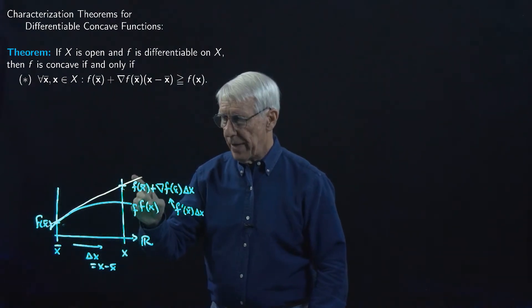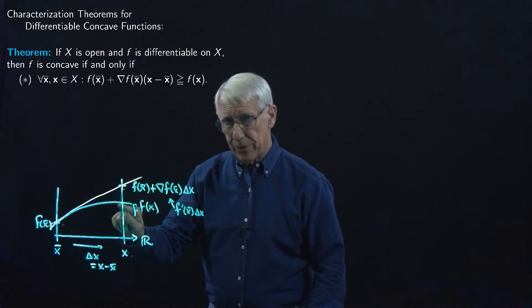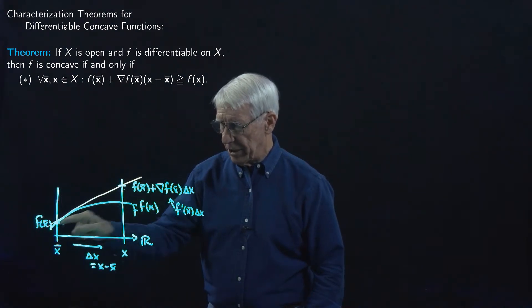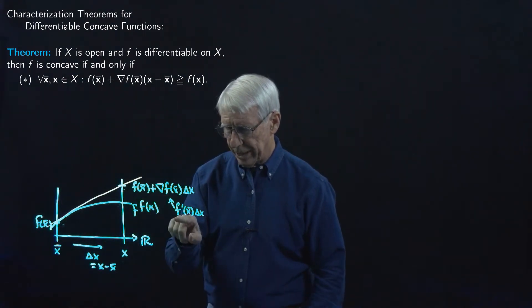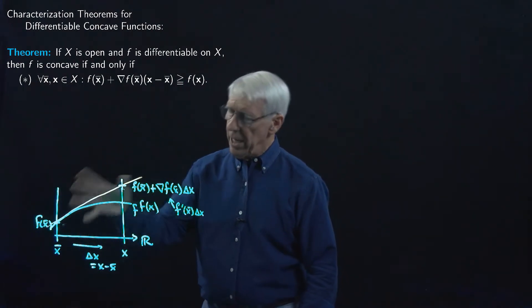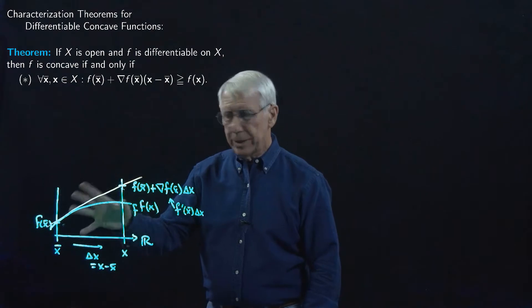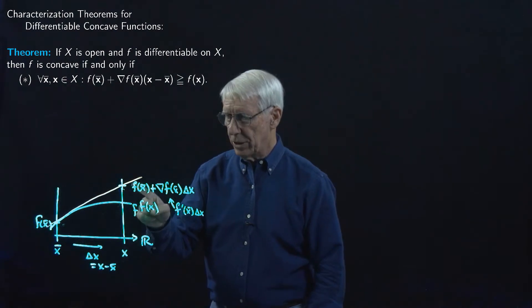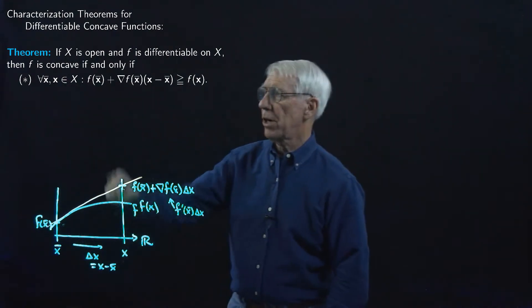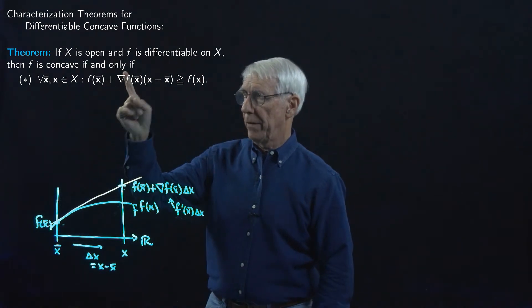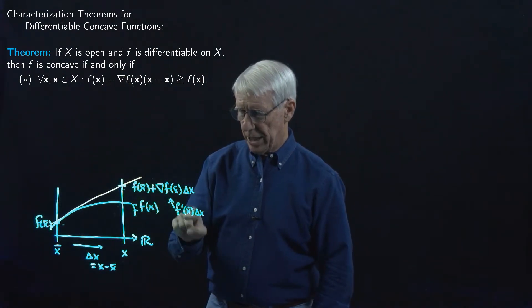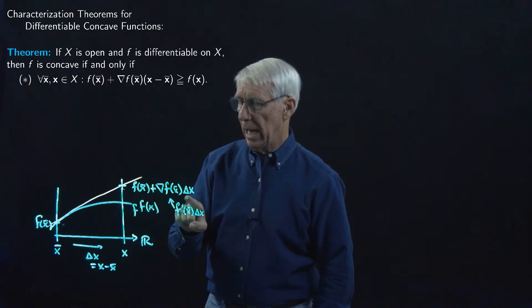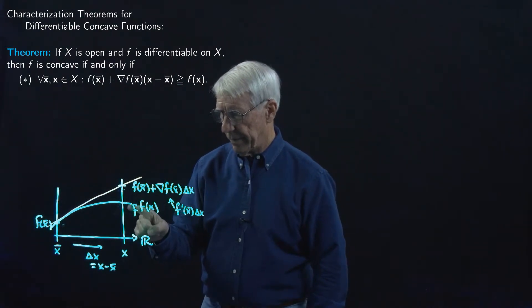And so indeed, it must be the case that the value of F over here at X must be lower than the value along the line, which is F of X-bar plus, in this picture here, F' at X-bar times delta X. So intuitively, it seems pretty clear that this must be the case if the function is concave. And also, now you can see that this picture is describing what's going on in the theorem. On the left-hand side, we have F of X-bar plus the gradient times delta X in general in R^L, and on the right-hand side we just have F of X.